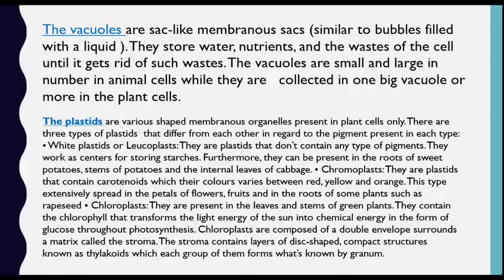There are three types of plastids that differ from each other in regard to the pigment present in each type. The first type is white plastids, or leukoplasts — they do not contain any type of pigments. They work as centers for storing starches and can be present in the roots of sweet potatoes, stems of potatoes, and the internal leaves of cabbage.